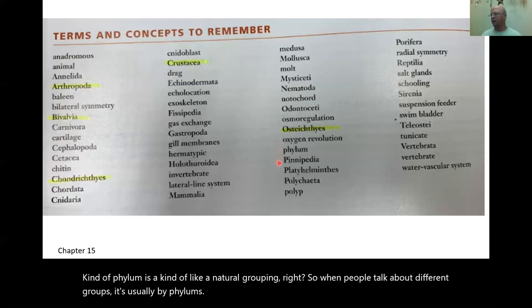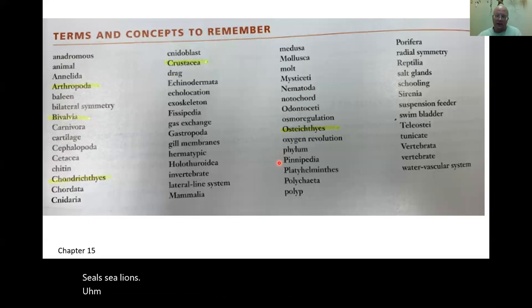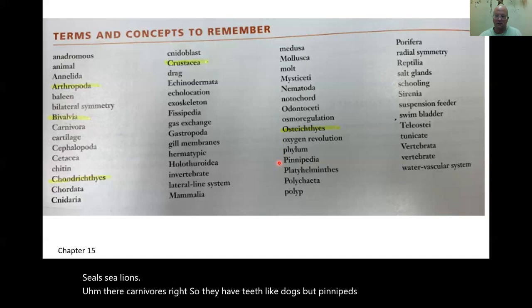Pinnipedia includes seals and sea lions. They're carnivores — they have teeth like dogs. Pinnipeds are seals and sea lions.